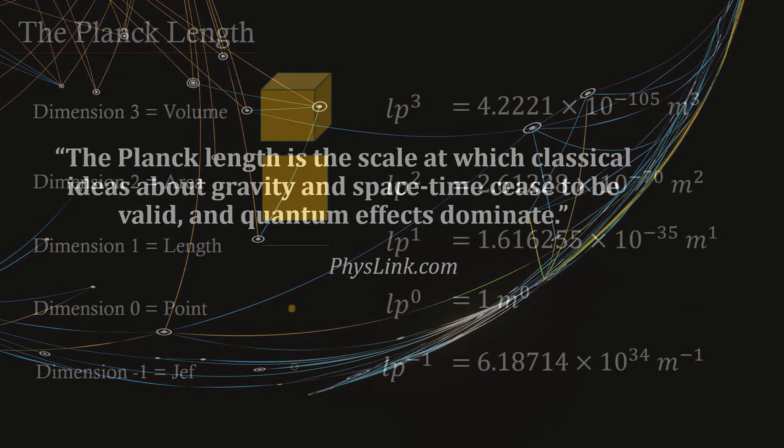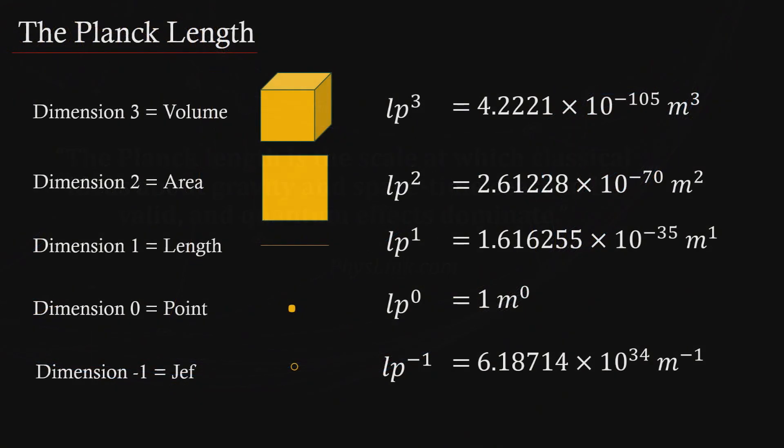Just for fun, we're going to use the Planck length for our traditional measurement calculations of objects. According to Wikipedia, if a length smaller than this is used in any measurement, then it has a chance of being wrong due to quantum uncertainty.